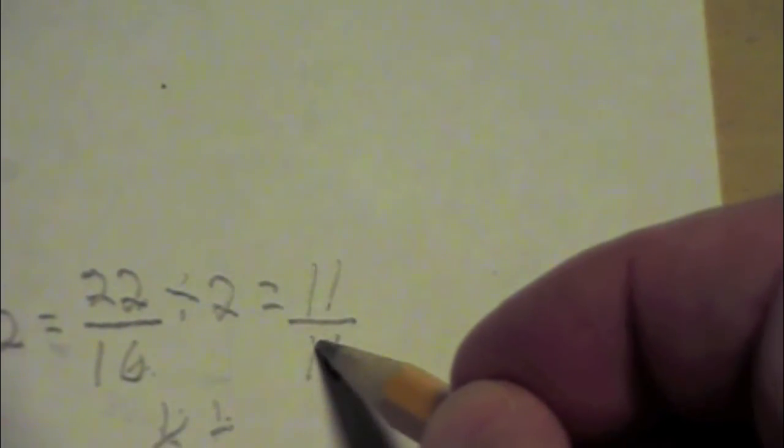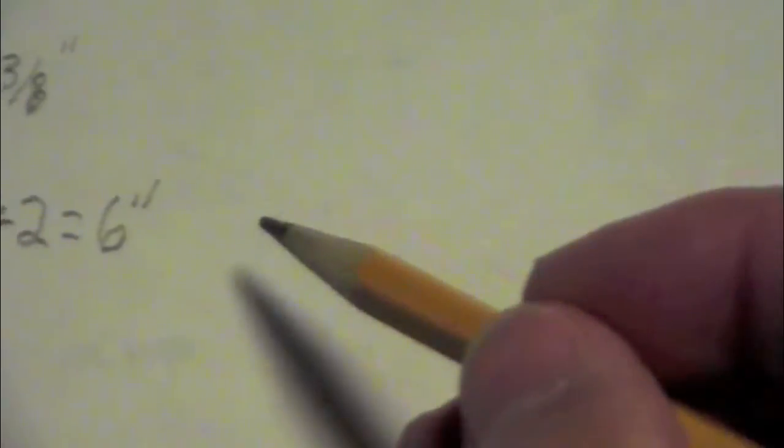So we have eleven-sixteenths is half of our one and three-eighths. Eleven-sixteenths. So we had the six inches from up here, and eleven-sixteenths. So the center line of our piece of wood is going to be six and eleven-sixteenths from either end.